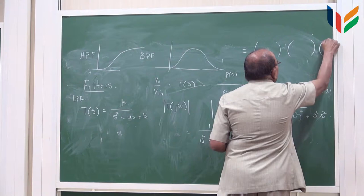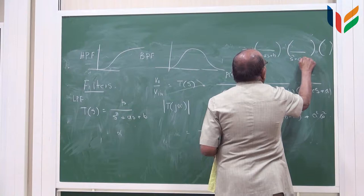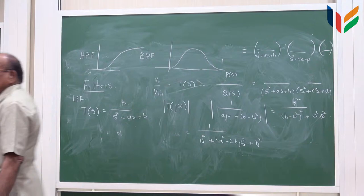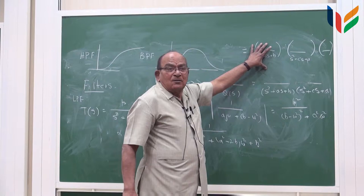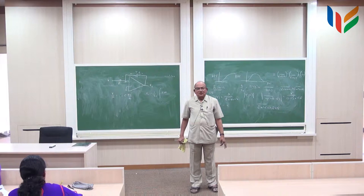This corresponds to S square plus Es plus B, and this corresponds to S square plus Cs plus D, some other set of poles like this. So if I design a filter for this, a similar filter for this, a similar filter for this, and put them all in cascade, one after the other, I get the overall transfer function.